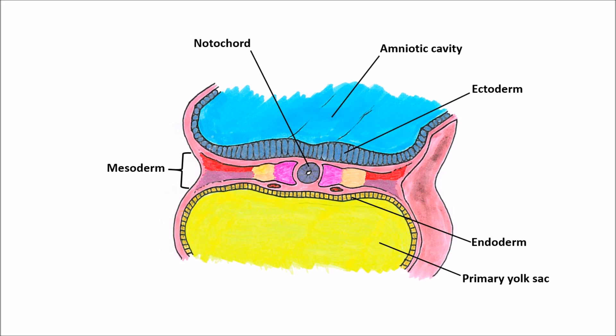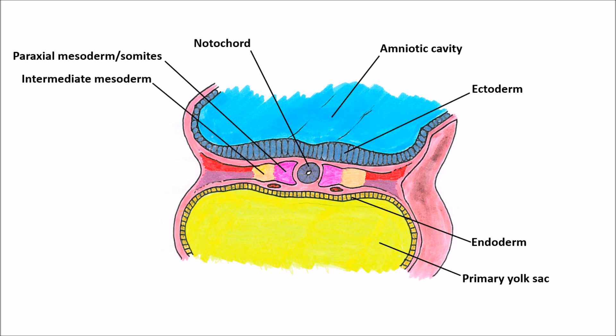Surrounding the primary yolk sac is the endoderm. The primary yolk sac will dwindle to pretty much nothing as development proceeds, but the endoderm will form the lining of the gut tube, and a little remnant of the yolk sac will be present just inside that lining. The mesoderm itself needs to be subdivided into the paraxial mesoderm, which will differentiate into somites; the intermediate mesoderm, which will become the urogenital system; and the lateral plate mesoderm, which is going to be one of the major players in this process.